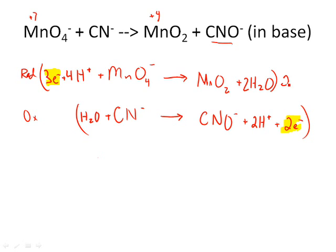So 2 times 3 is 6 electrons on the top, and 3 times 2 is 6 electrons on the bottom. So now we can see what is in our reaction. So 4 times 2 is 8 hydrogen ions.